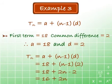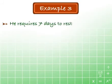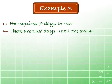Since he requires a week or 7 days off before the swim, and there are 128 days until the swim, we want to see how many lengths he will swim in 128 minus 7, which equals 121 days time.